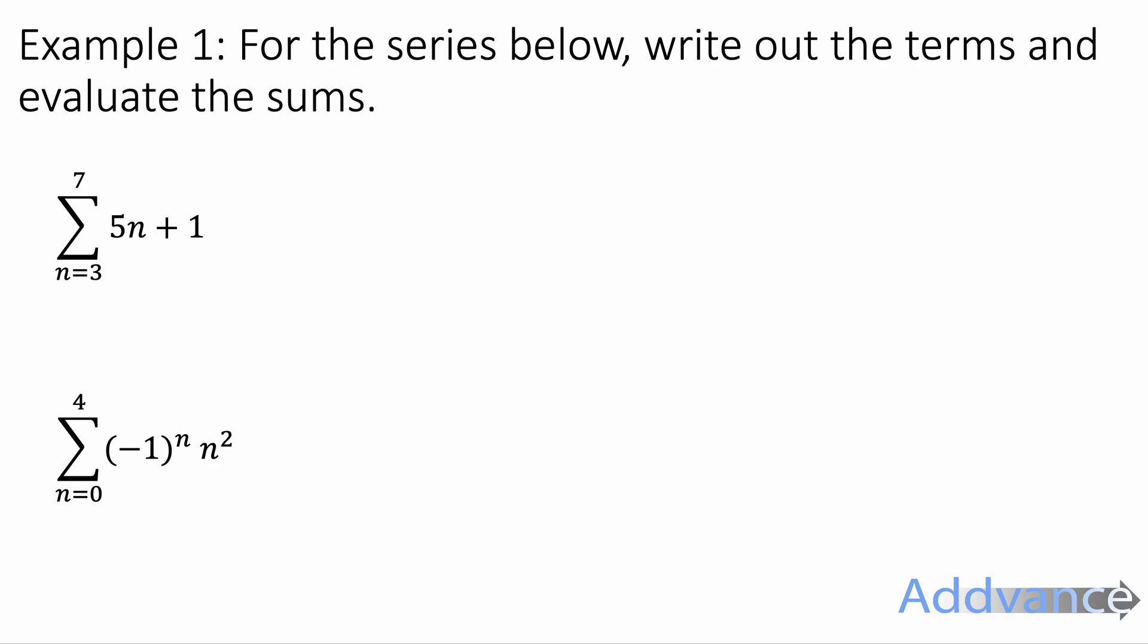For the series below, write out the terms and evaluate the sums. So here we have the sum between n equals 3 and 7 of 5n plus 1. We're going to substitute every integer between 3 and 7 into 5n plus 1.